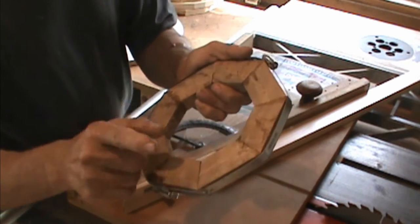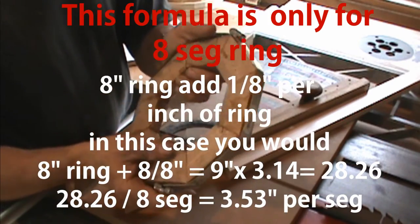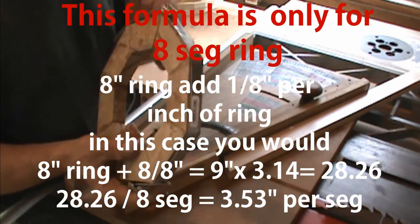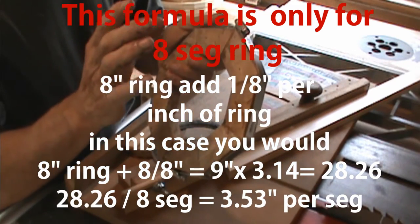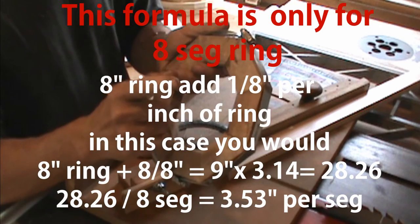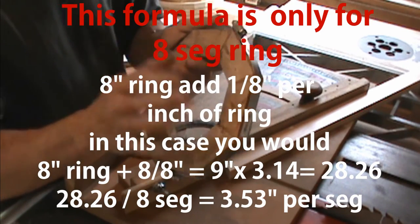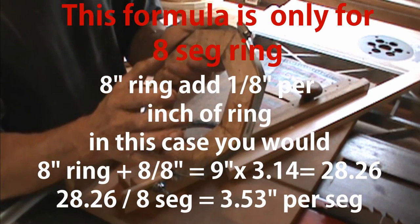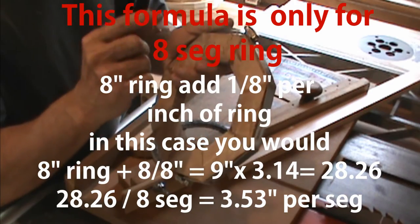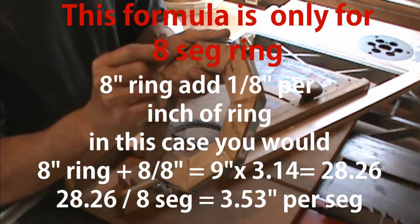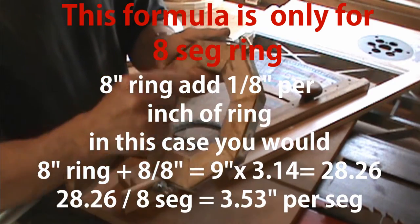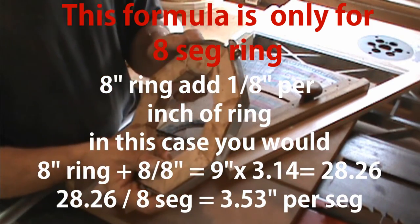A formula that I know that works for me, and it changes based on how many rings you have. But if you take, let's say you want to end up with an eight-inch ring. You add one-eighth of an inch for an eight-segment, of one-eighth of an inch per inch of circumference.